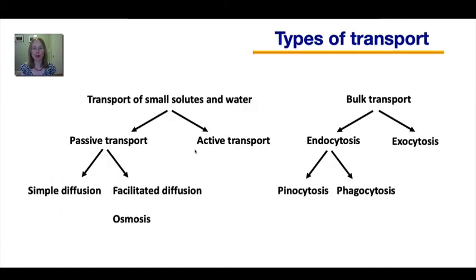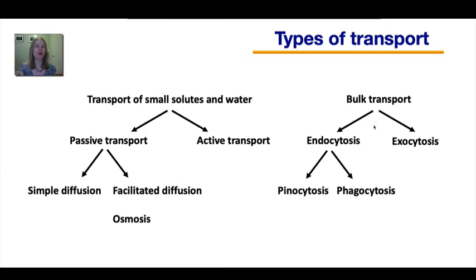Now let's summarize what we've covered: the transport of small solutes and water using two categories of passive transport — simple diffusion and facilitated diffusion — with osmosis being a specialized case of facilitated diffusion, plus active transport. Now we'll move on to bulk transport, which occurs when cells need to move either very large particles or larger quantities of particles into or out of cells, through endocytosis versus exocytosis.